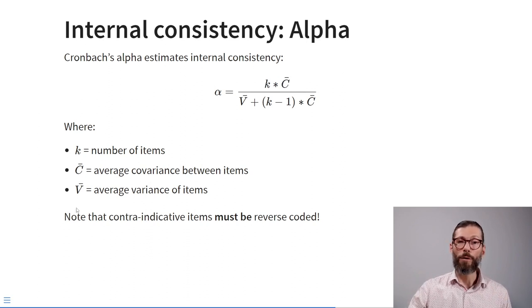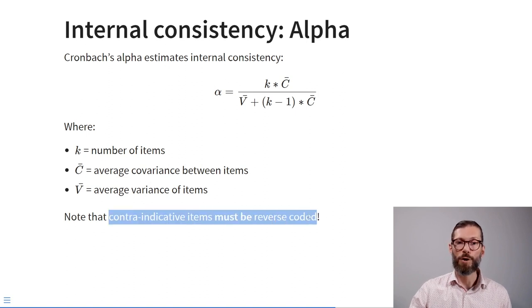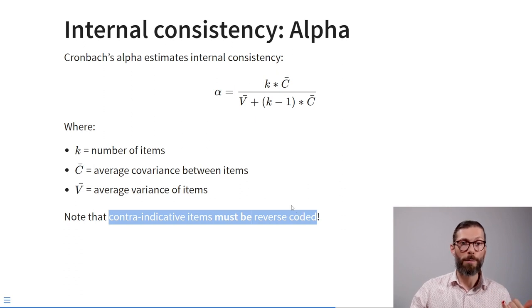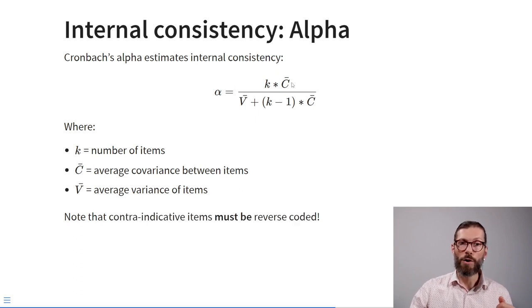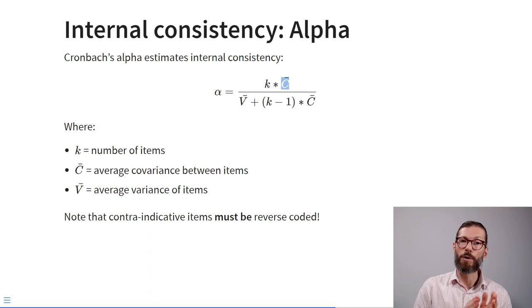Note that when calculating Cronbach's alpha, contraindicative items must be reverse-coded. A single negatively-worded item that is not reverse-coded will severely lower the average covariance between items, because that item would have a negative covariance with all others.